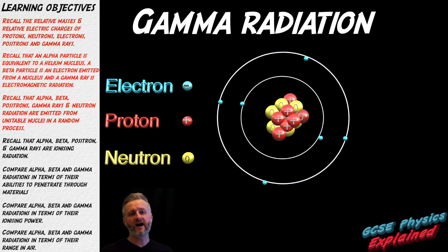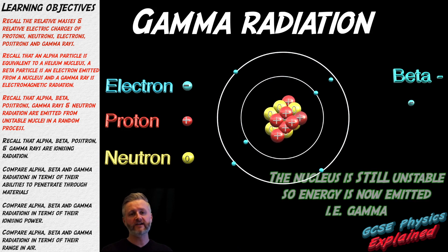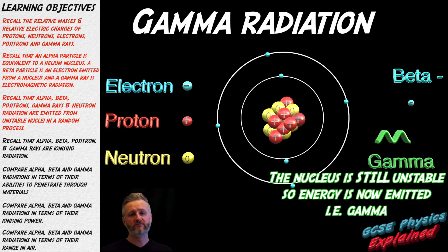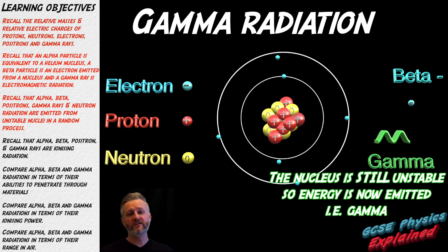Gamma radiation is a high frequency and high energy electromagnetic wave. It is emitted from an unstable nucleus, usually after a different type of radiation has been emitted from the nucleus first but which left the nucleus still with too much energy. So that's when gamma is released to try to get rid of some of that energy.